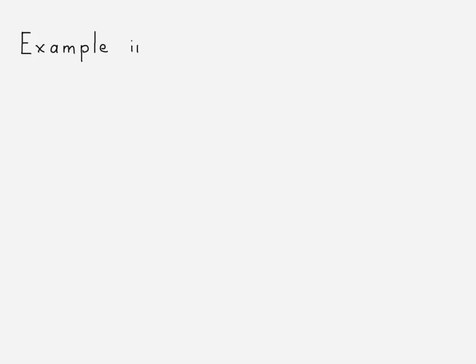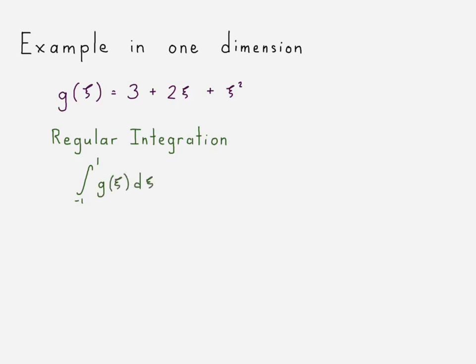Okay. So we're going to take an example of applying Gauss quadrature. This does not apply to finite elements analysis right now. This is just an example problem in one dimension. Say that we have a function g in terms of xi. That looks like that. And if we wanted to do a regular integration of that function between minus 1 to 1, we could go ahead and do that. And if we evaluated it, we'd end up getting 6 and 2 thirds.